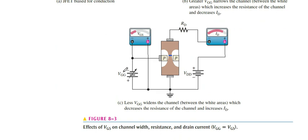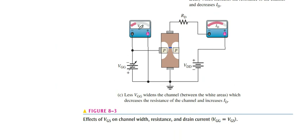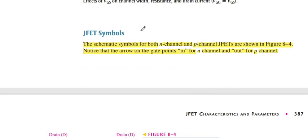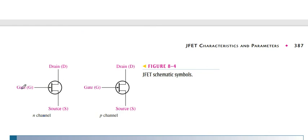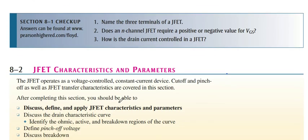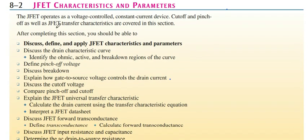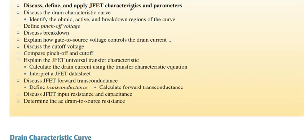So basically we use JFET as a reverse biasing of VGG or VGS. Symbolically represented like that - this is N-channel, this is P-channel. Next is characteristics and parameters.